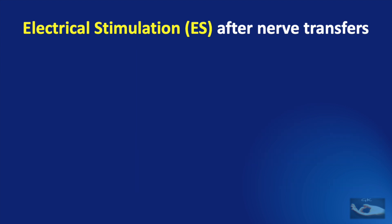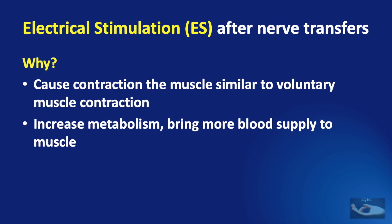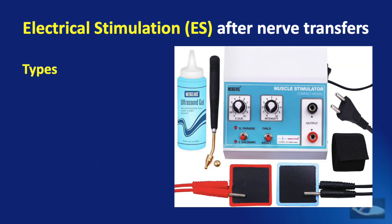Electrical stimulation plays an important role after nerve transfers because it causes contraction of the muscle similar to voluntary muscle contraction. It increases metabolism and brings more blood supply to the muscle, helps minimize the extent of muscle atrophy, and more importantly, it promotes nerve regeneration. There are basically two types of electrical stimulation: galvanic and faradic.